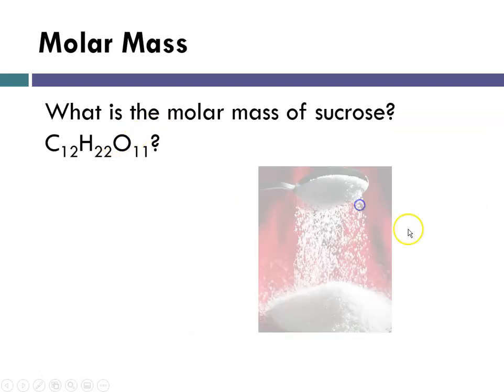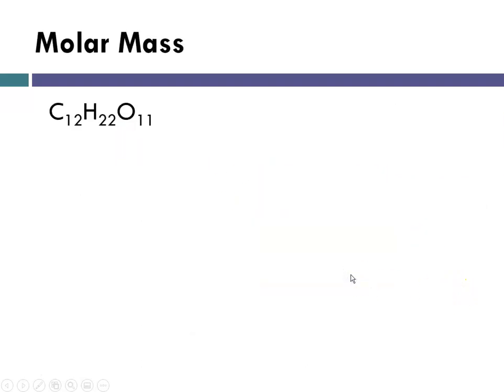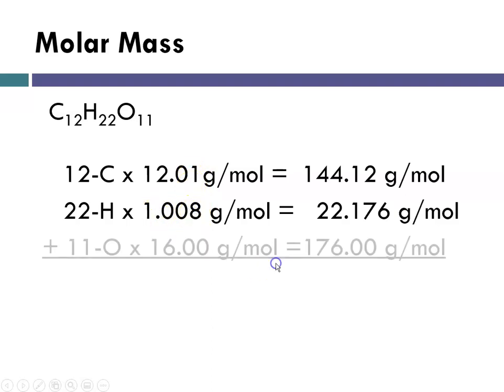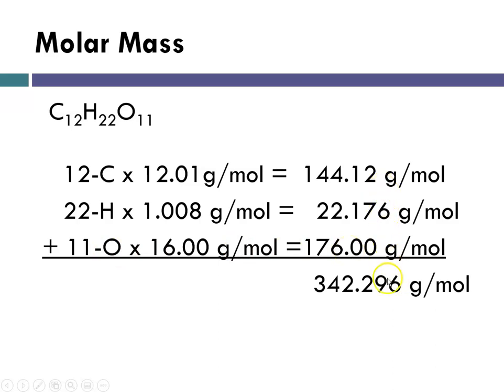What about something like sucrose, which is table sugar? Again, the formula is going to lead us through. So 12 times carbon equals this, 22 times hydrogen. Where am I getting these numbers? I'm reading them off the periodic table, and I'm rounding to the hundredths place, and for hydrogen to the thousandths place. 11 oxygens is going to be this number. Then I add them up, and because I had a hydrogen present, I am not at the hundredths place. So my last step is always to round to the hundredths place. This 6 is going to cause me to have to round this up. So my molar mass in this case is 342.30, again, to the hundredths place.